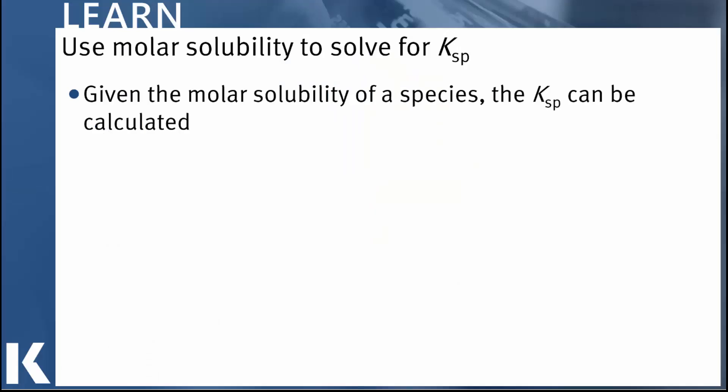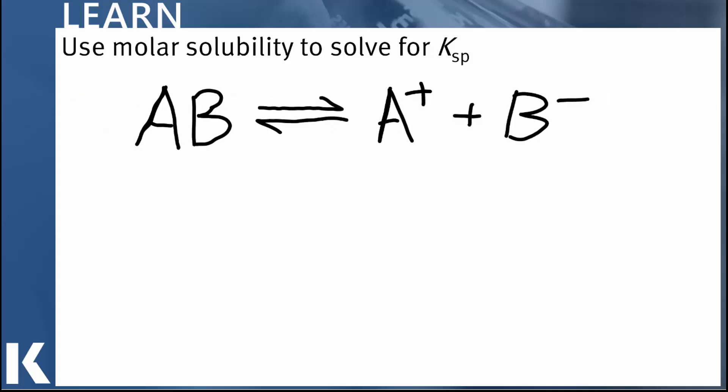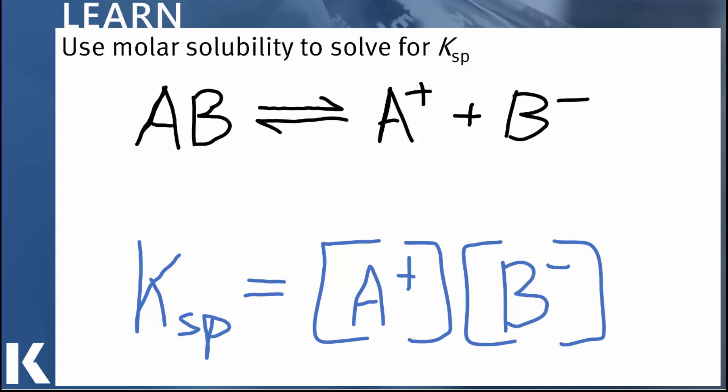To start with a molar solubility for an ionic species and calculate the Ksp, let's first write the equilibrium expression for that species. I've just got some generic compound here, let's call it AB, and that dissolves to give us A-plus and B-minus. The Ksp expression would look like this then. It's the concentration of A-plus times the concentration of B-minus, both in moles per liter.